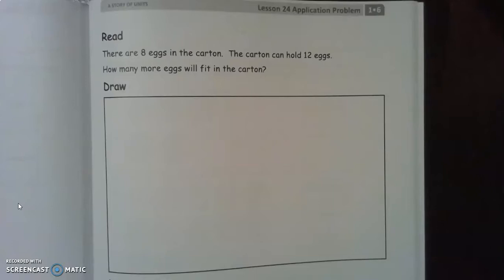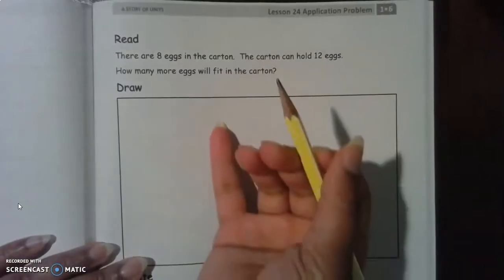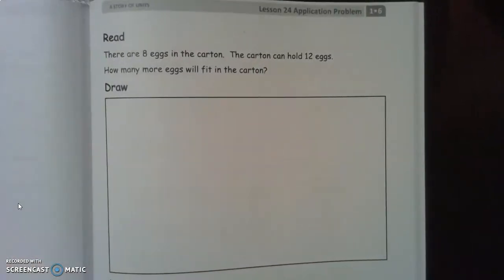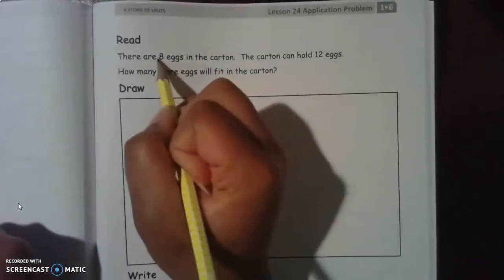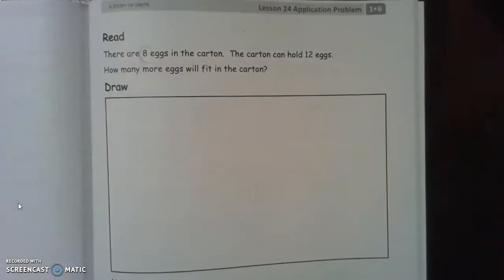All right, everybody open your eyes. Let's read together. It says there are eight eggs in the carton. So what are we going to do? Exactly. Circle how many eggs are in the carton? Eight.